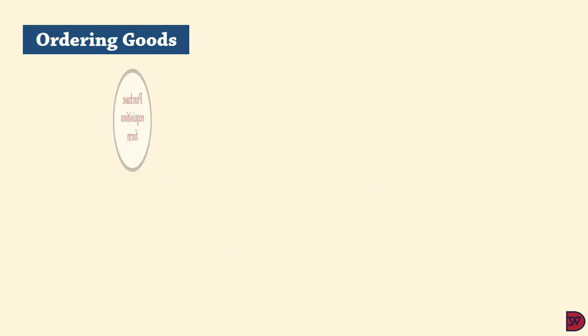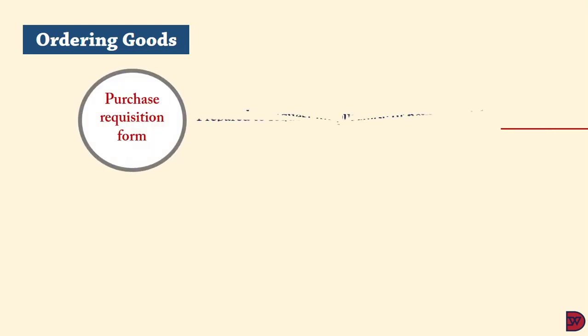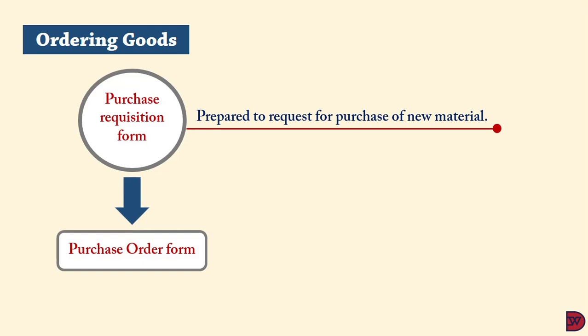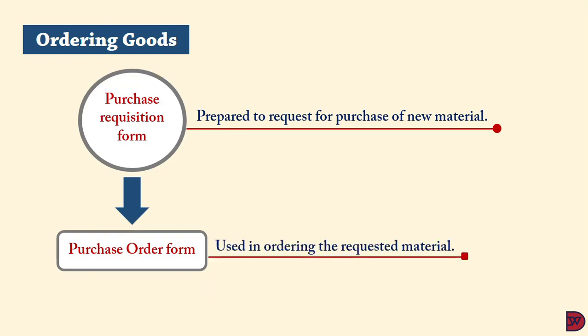We start with ordering of goods via the purchase requisition form. When a department requires new material, they will first send a purchase requisition form to the purchasing department. The purchasing department will then send a purchase order (PO) to the relevant supplier, authorizing them to deliver. Before the PO is issued, the purchasing department checks that goods are available at reasonable prices. Copies of the PO are sent to the accounting and stores departments.